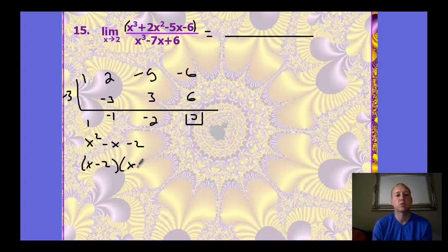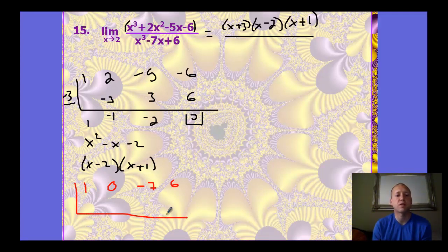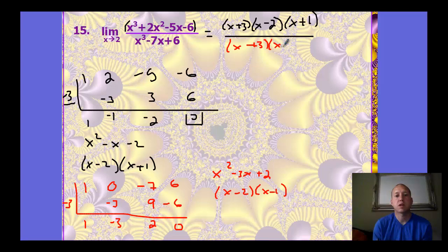x² − x − 2 factors to (x − 2)(x + 1). So the numerator is (x + 3)(x − 2)(x + 1). We then factor the denominator the same way using synthetic division with −3, noting the zero x² term, and we're left with x² − 3x + 2, which factors to (x − 2)(x − 1). So the denominator is (x + 3)(x − 2)(x − 1).